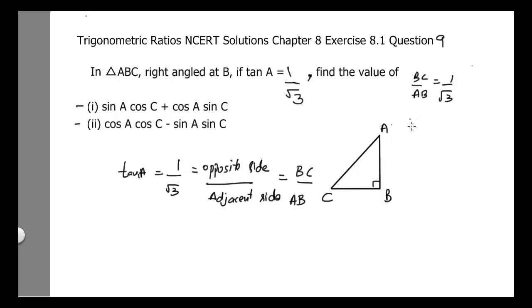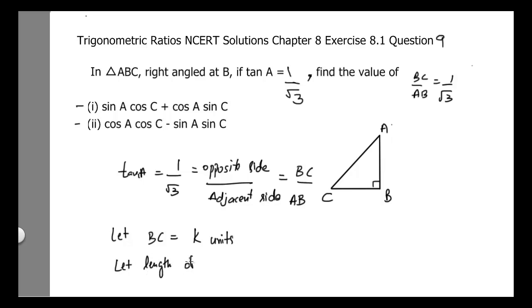From here, we can suppose that let the length of BC equal K units, and let the length of AB equal square root of 3 K units.